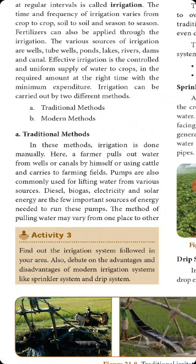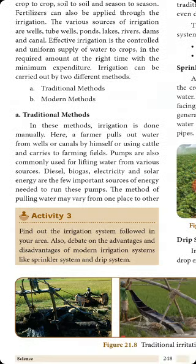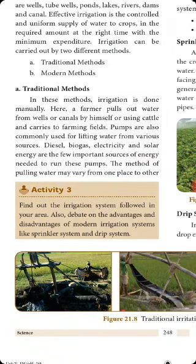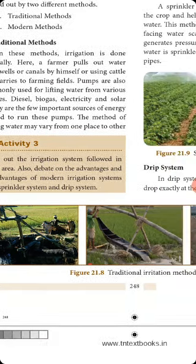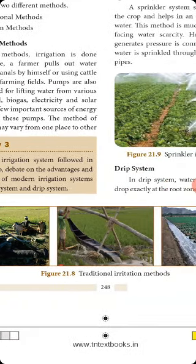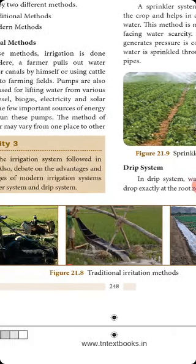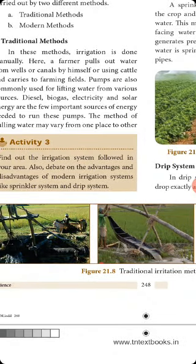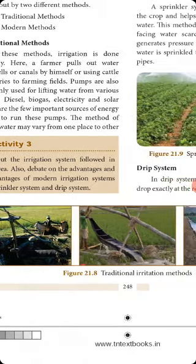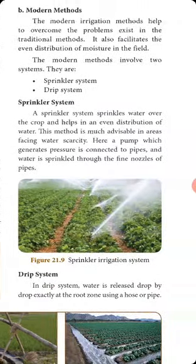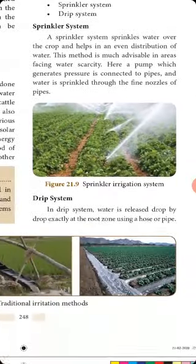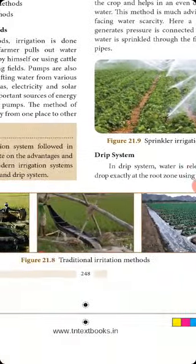The two irrigation methods are traditional methods and modern methods. In traditional methods, we look at various techniques. In modern methods, there are sprinkler methods and drip methods.